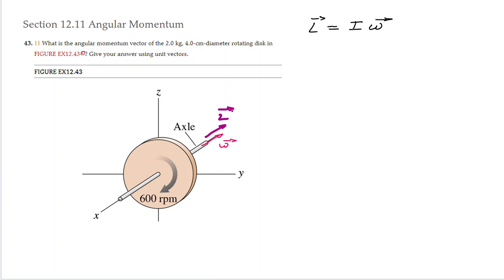To determine those directions, what you have to do is apply the right-hand rule. Now, what else do we know here? We know the mass and the diameter of the solid disc, so we know that for a disc like this the moment of inertia would be equal to 1/2 times the mass times the square of the radius. We know the mass is 2.0 kg and we know the radius would be 2 centimeters.